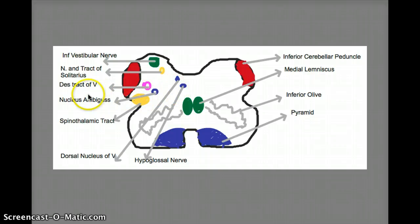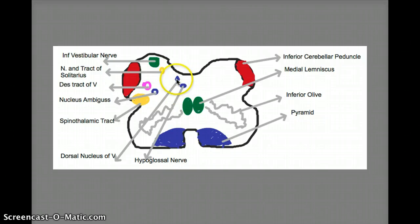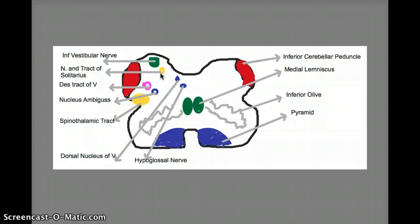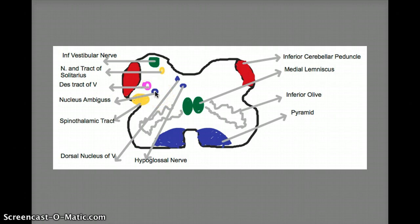Everything from this line onwards, leaving the hypoglossal out, is going to be our lateral medulla. The structures affected in the lateral medulla include: the dorsal nucleus, which carries cranial nerve 10; the nucleus solitarius, which carries cranial nerves 7, 9, and 10; the spinothalamic tract, responsible for pain and temperature; and the nucleus ambiguus, responsible for cranial nerves 9, 10, and 11. These are the structures affected in lateral medullary syndrome.